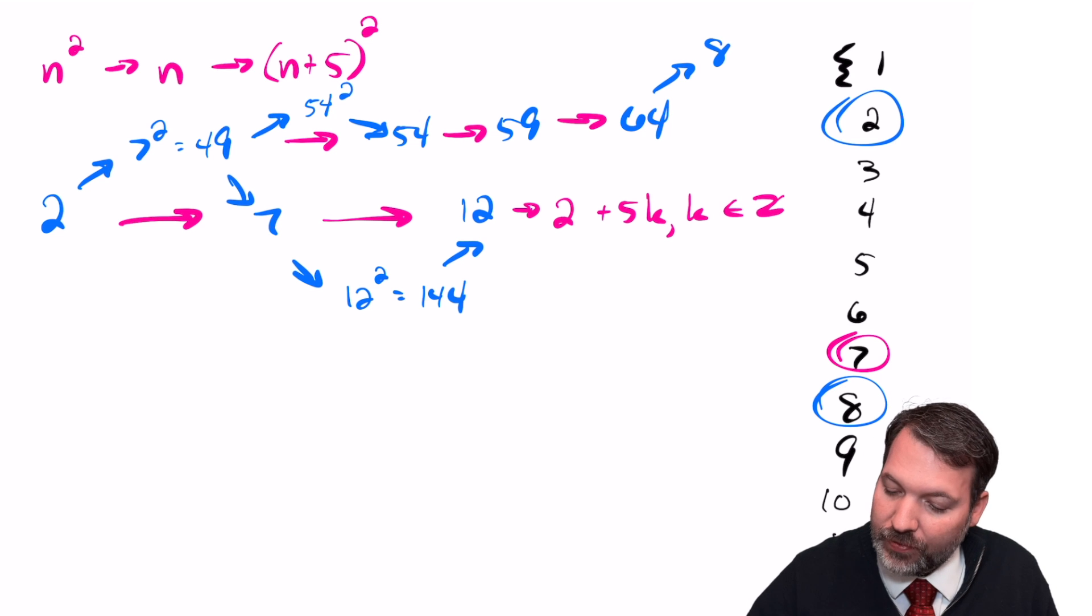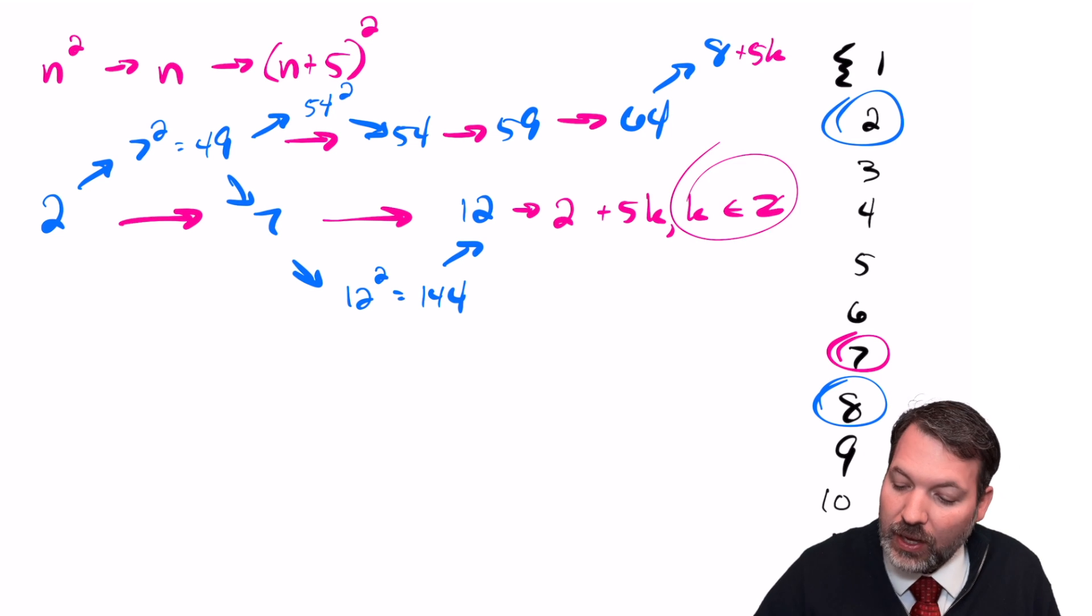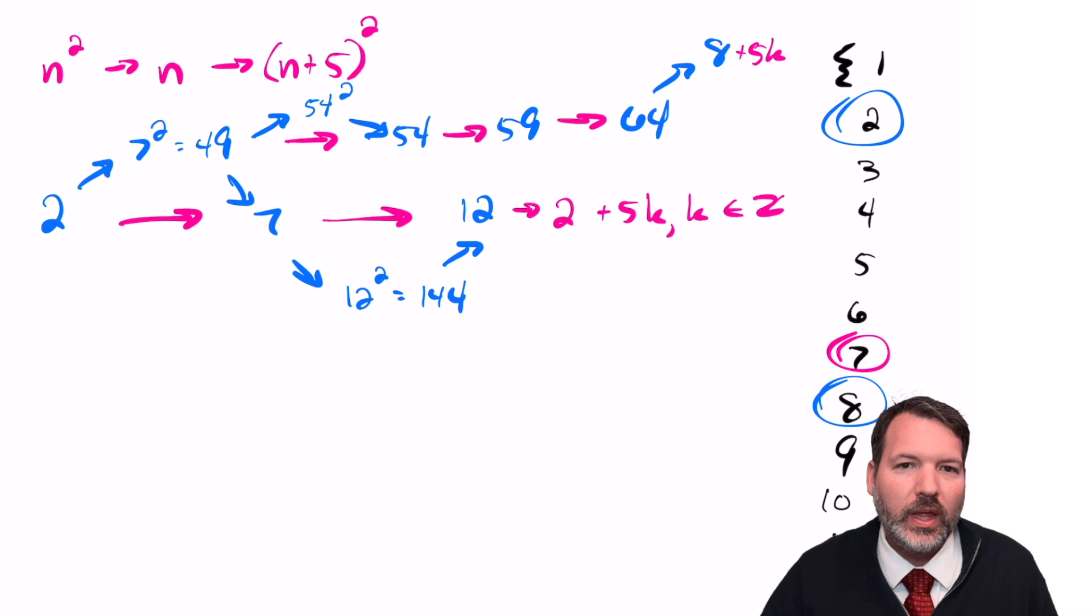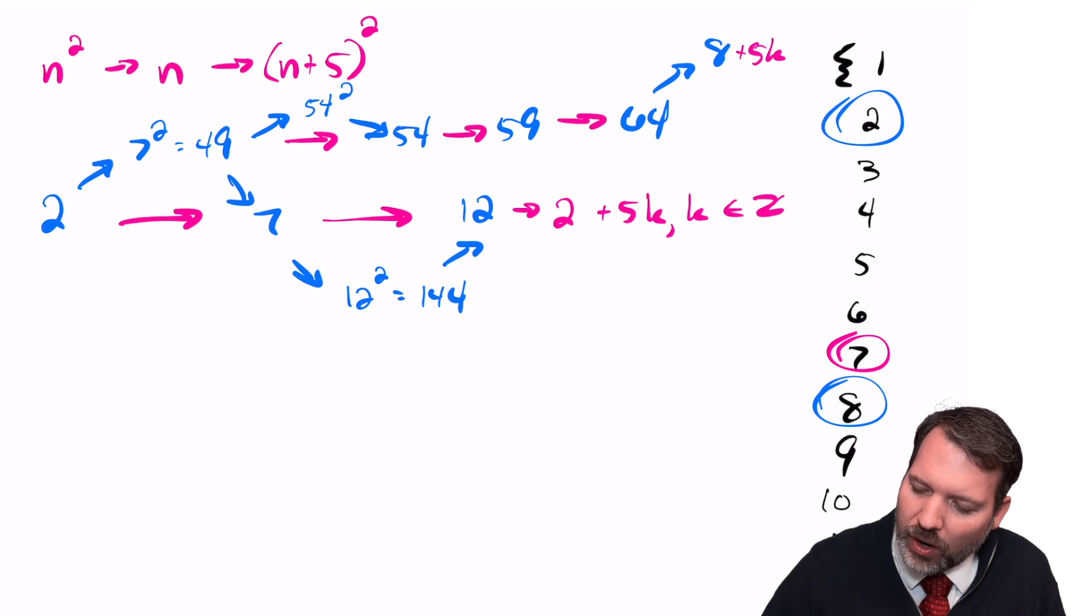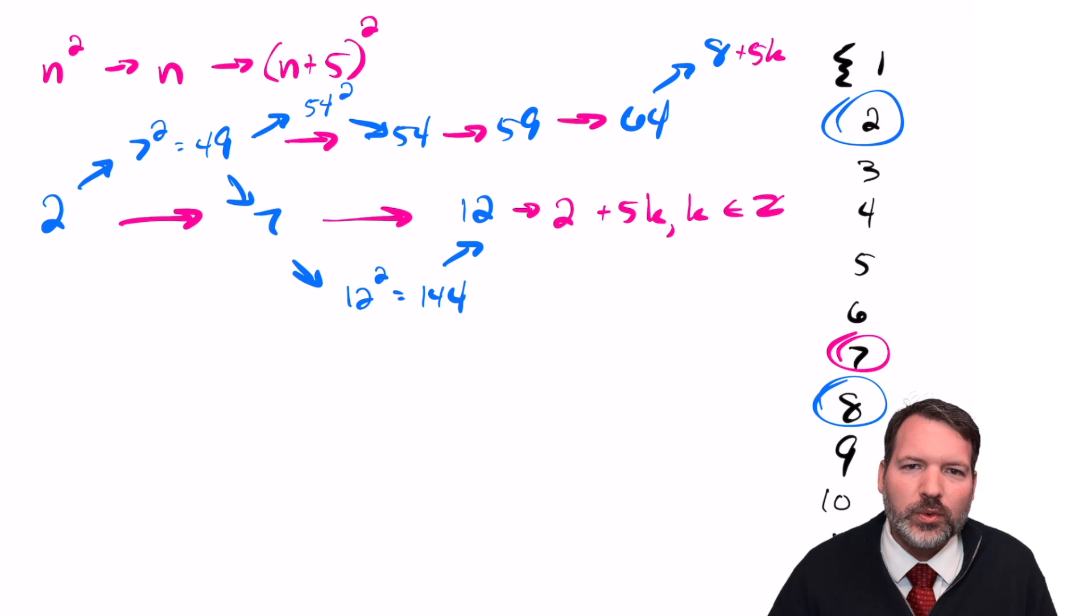And so now we can say for sure 8 and all the numbers 5, 10, 15, 20, greater than 8 also have to be in the set. If we want, we can jot that down 8 plus 5k. Again, k being some integer. And so now we start to think about, well, what are some other collisions, right? Where else would we run into some perfect squares that we could eventually take the square root of and get back 9 or 6 or 5 or 4 or whatever it might be?